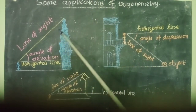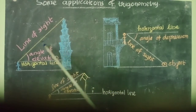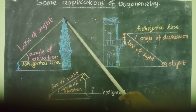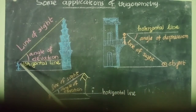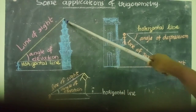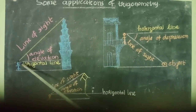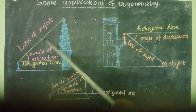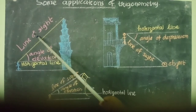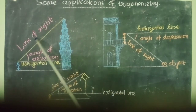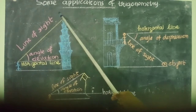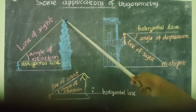You see the first figure — here you can see a building and one person is here, looking to the top of the building. The person is on the ground level, looking up to the top of the building. From his eye to the top of the building, we can draw a line. That line is known as the line of sight. The line of sight is the line drawn from the eye of the observer to the point viewed by the observer.